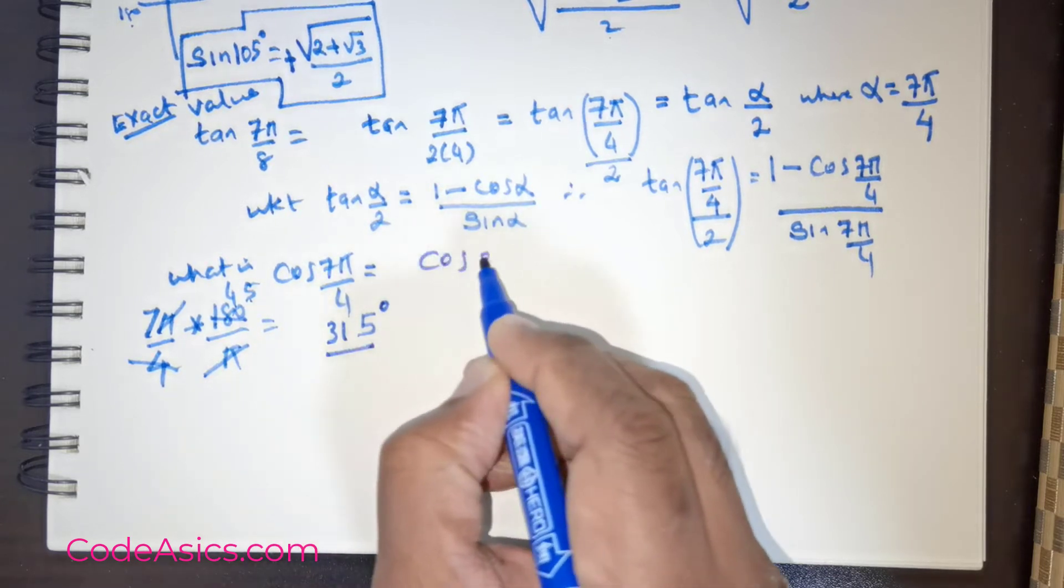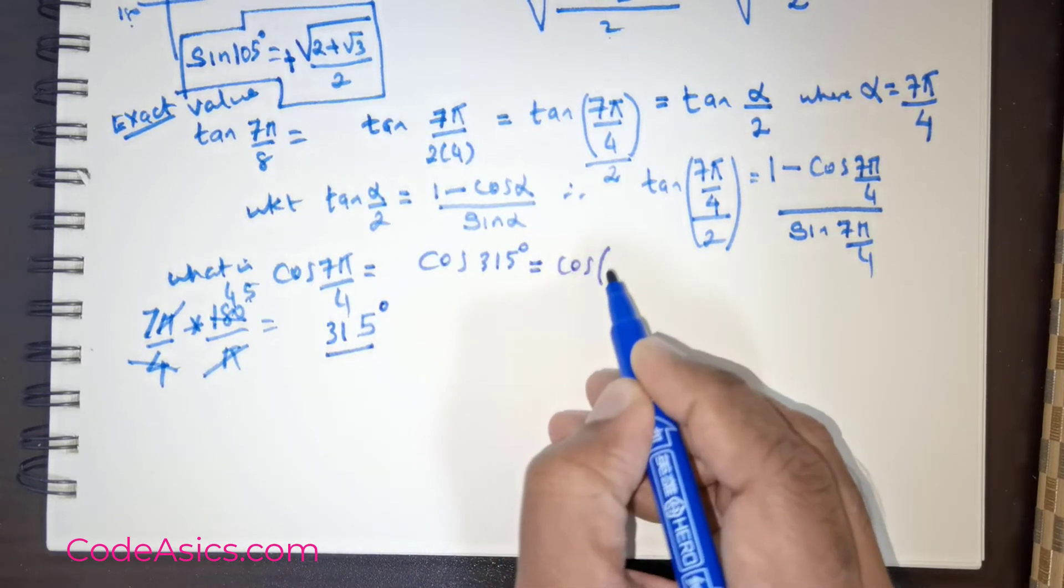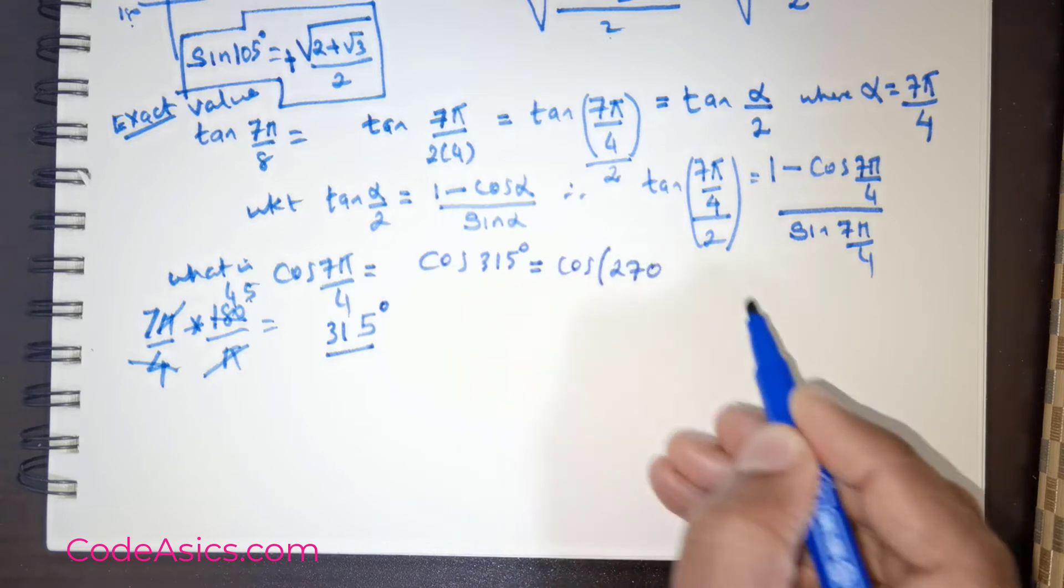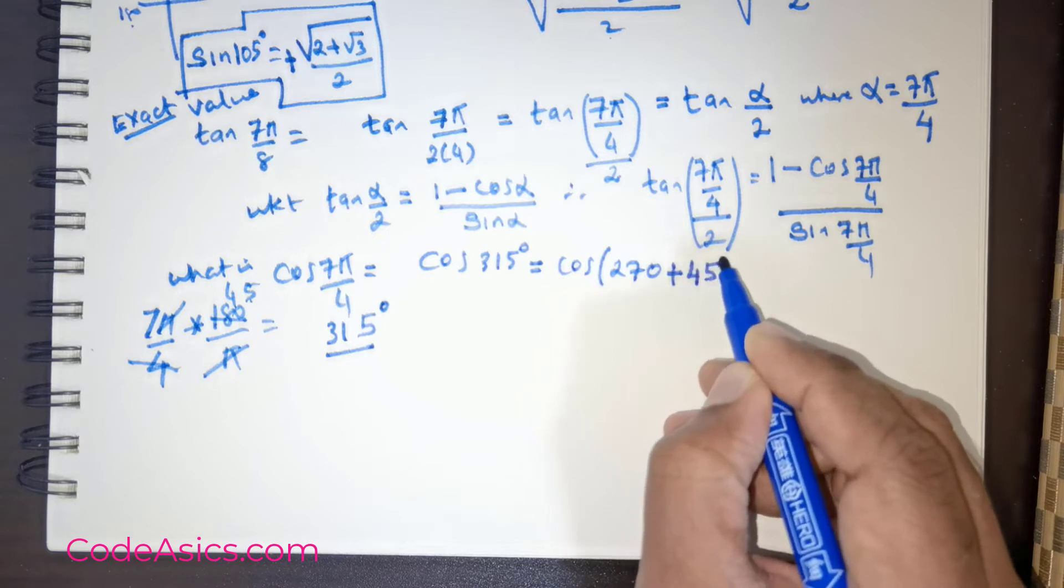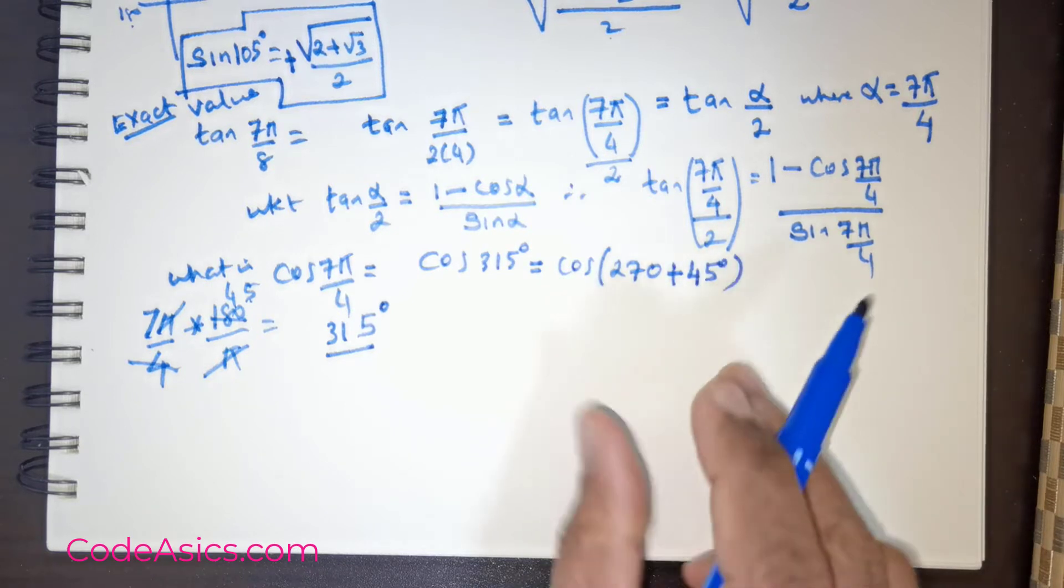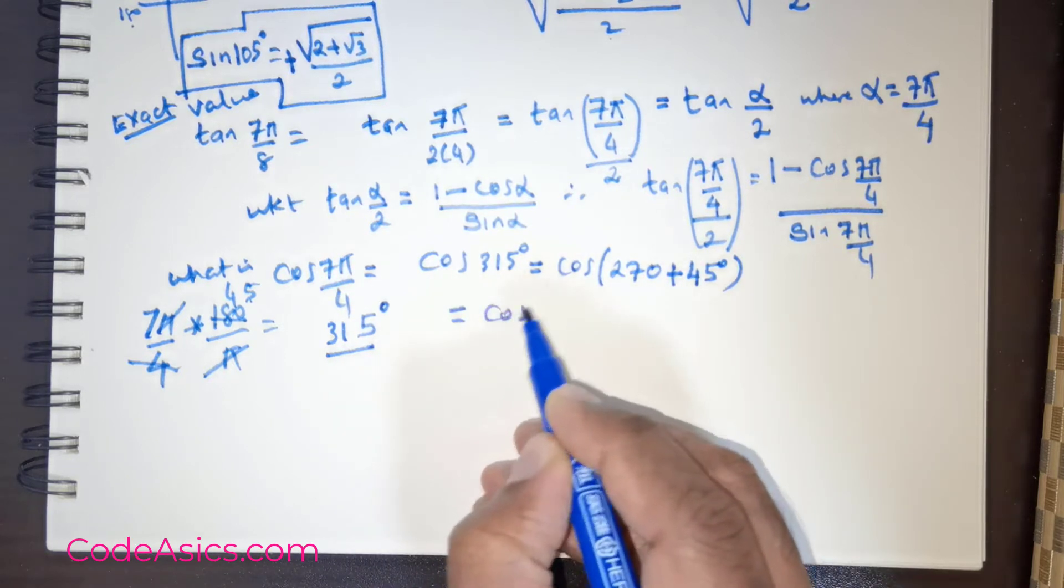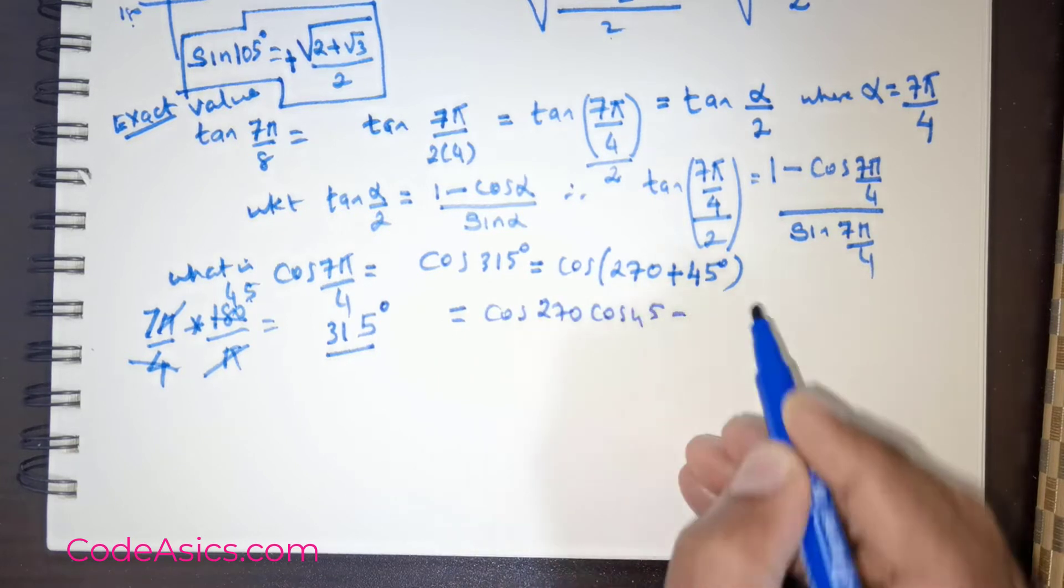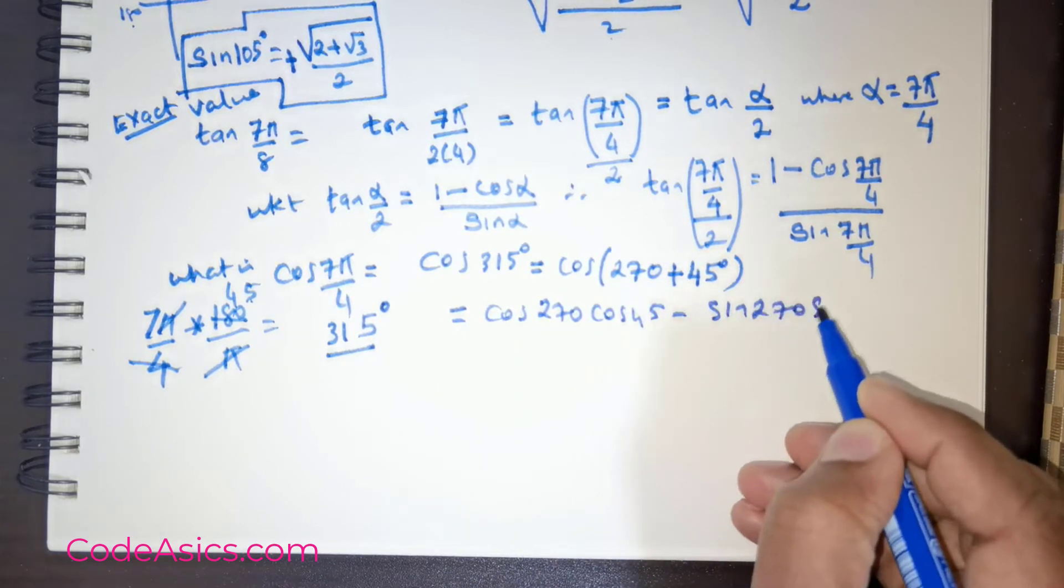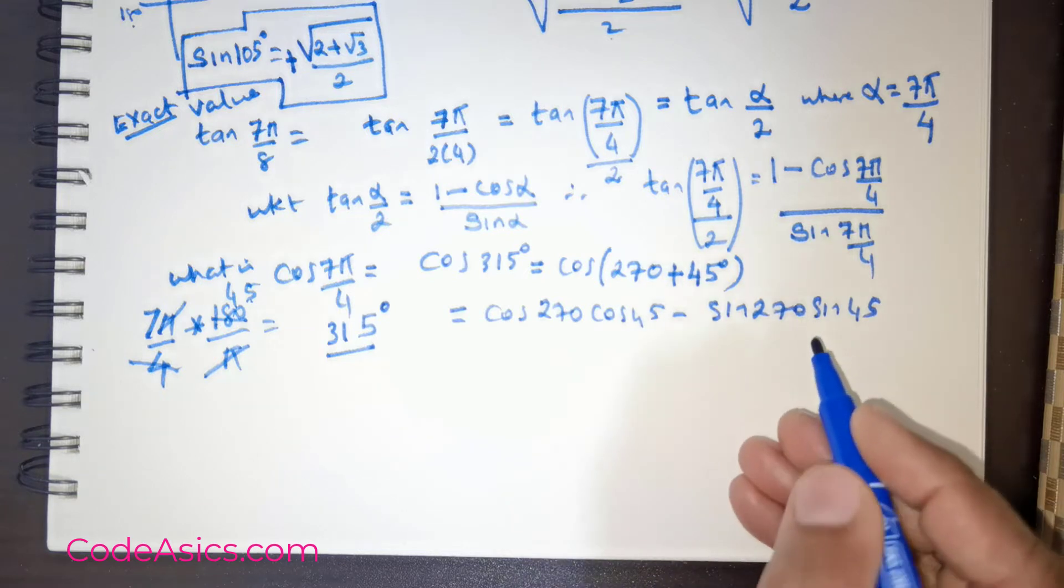Now I want to write 315 as cos of 270 plus 45. If I use cos of A plus B, this gives me cos 270 cos 45 minus sin 270 sin 45. So this is the value that I have got.